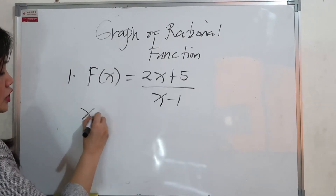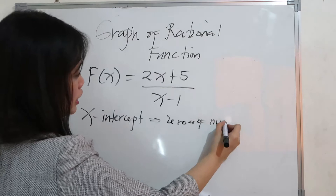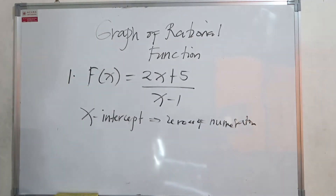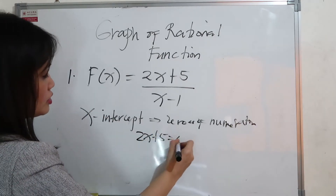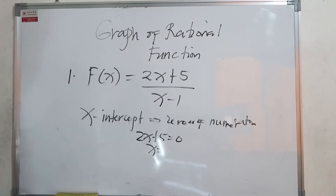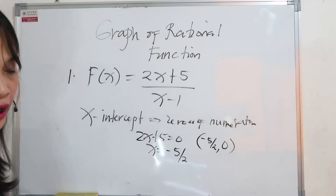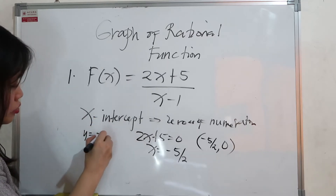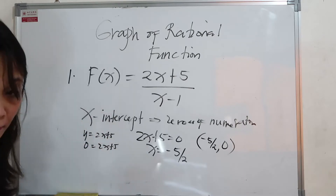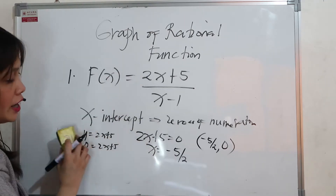First, we need to determine the x-intercept. The x-intercept refers to the zeros of your numerator — meaning the value of x when y equals zero. So, 2x plus 5 equals 0, giving x equals negative 5 halves. Therefore, your ordered pair is negative 5 halves and 0.